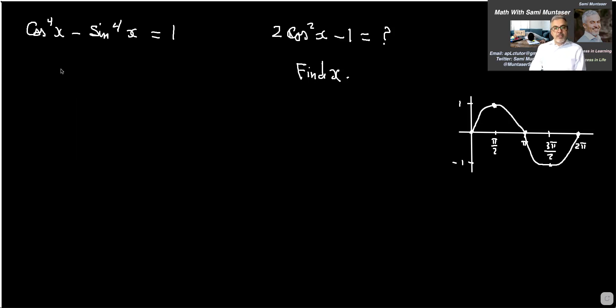So the first thing we want to do with this one here, definitely this is the difference of squares. So I'm going to factor this as cos squared x minus sin squared x, and cos squared x plus sin squared x equals one. Make sure you put that in brackets. Now from your identity sheet, cos squared plus sin squared equals one. So that's one. You don't need that anymore.